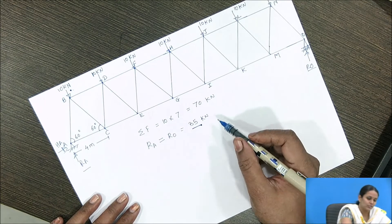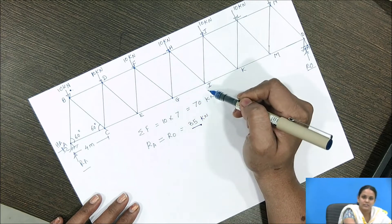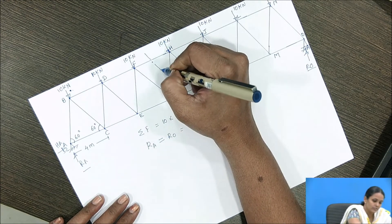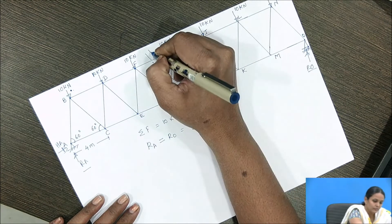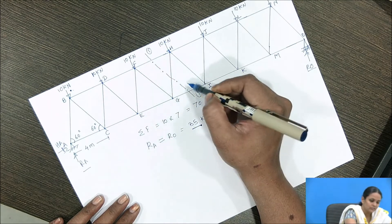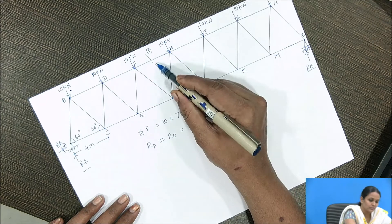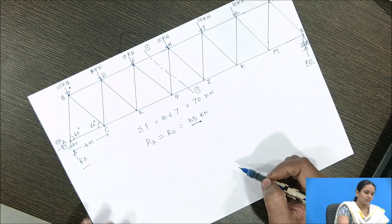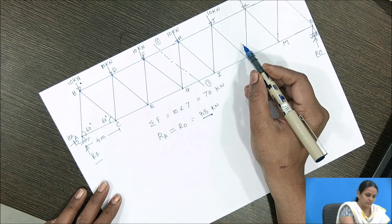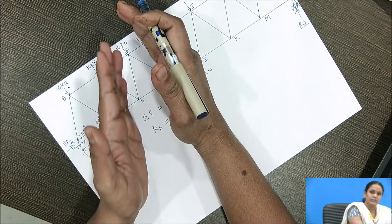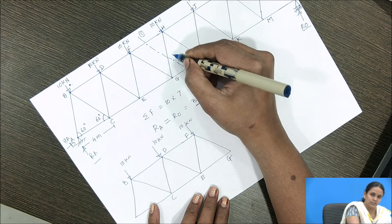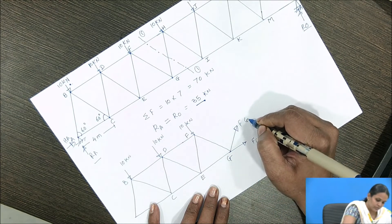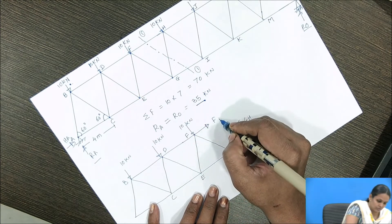Now we have to find the force in members FH, HG, and GI. After finding the reactions, we pass the section line through these three members. The section line — labeled 1-1 — passes through members FH, HG, and GI. Considering the left part of the truss after the cut, we identify: the force in member GI, the force in member GH, and the force in member FH, along with the reaction of 35 kilo newton.